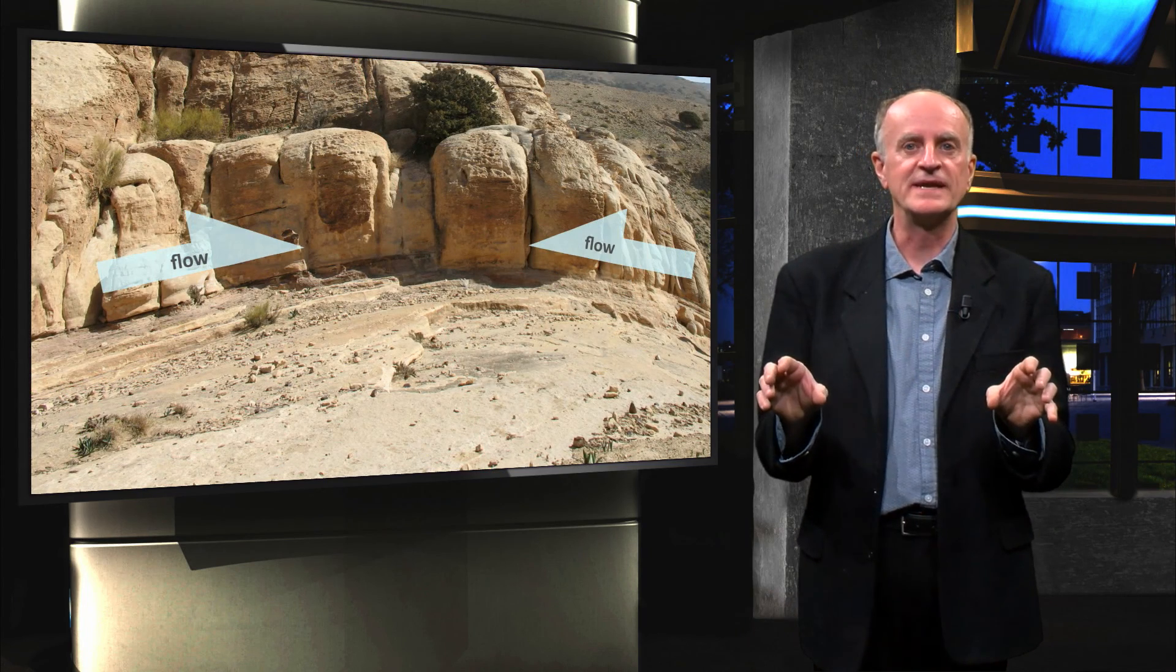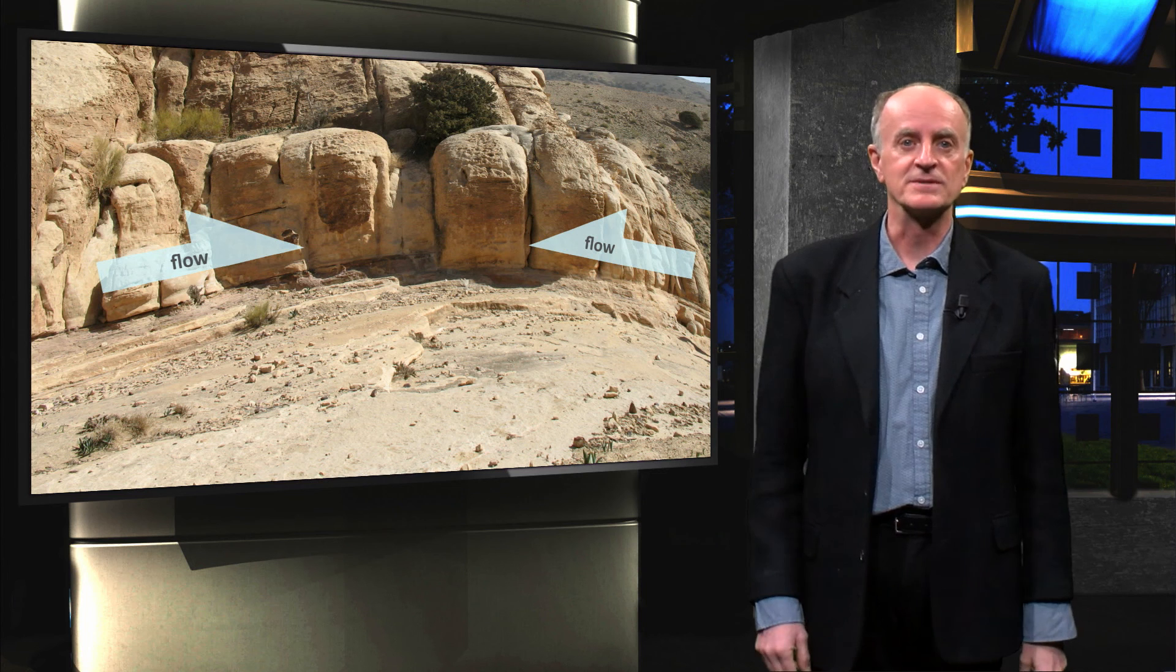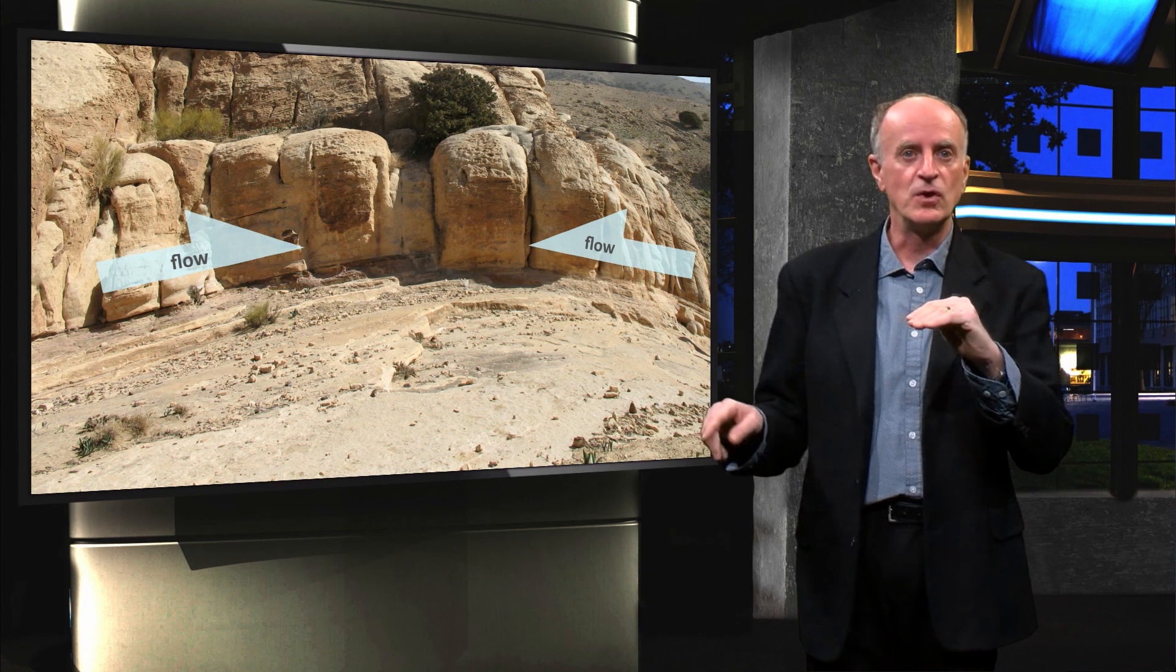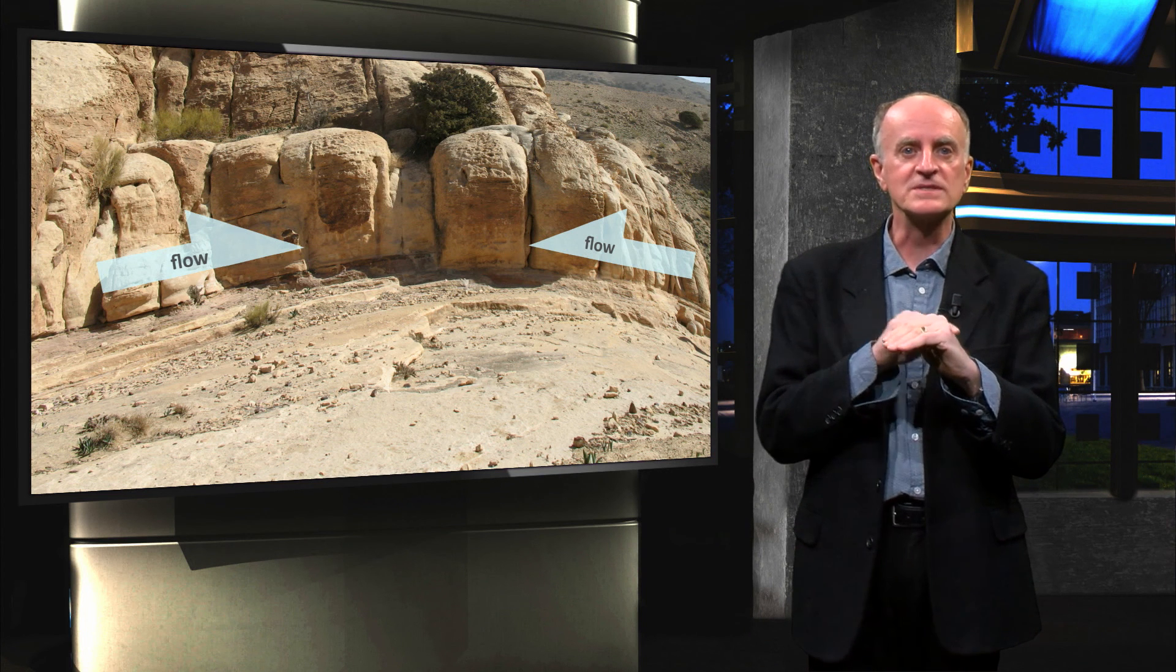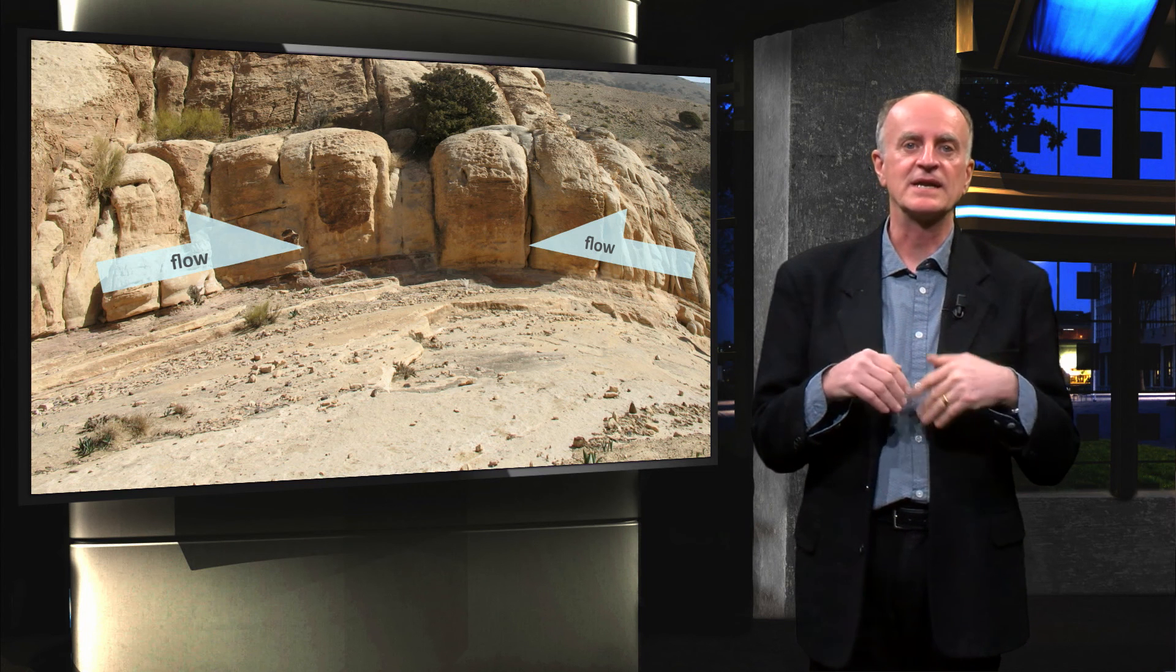Faults modify the position of layers controlling the flow of hydrocarbons. In the case of anticlines, flow lines can converge towards the hinge of the fold where a reservoir will develop.